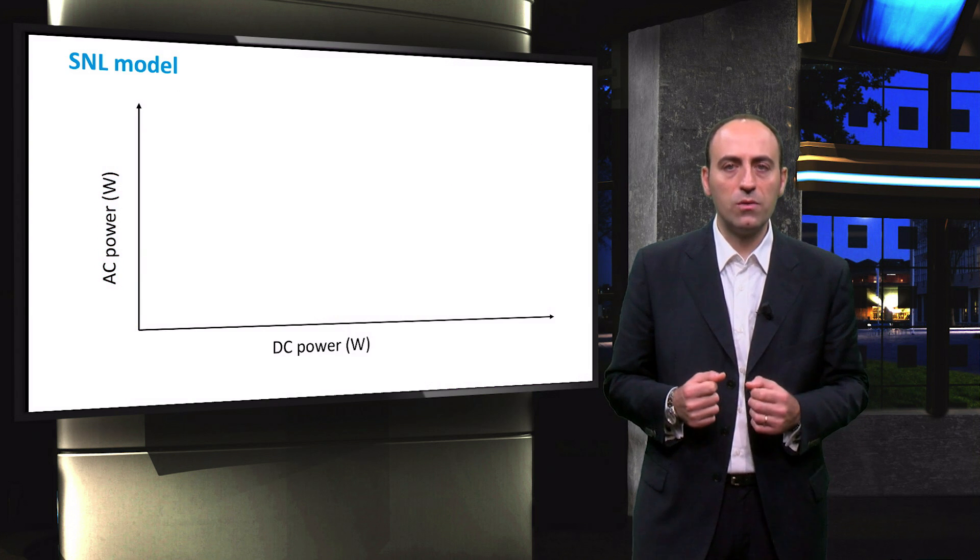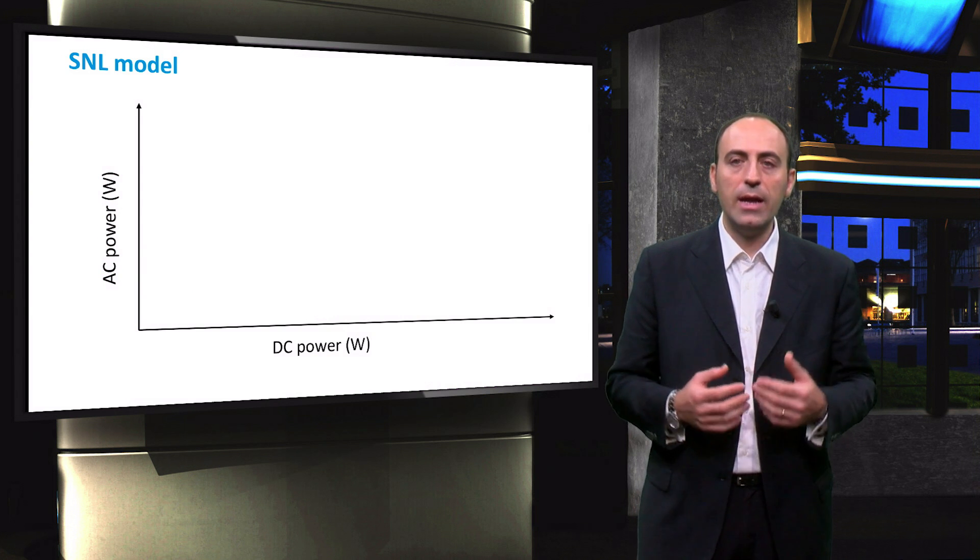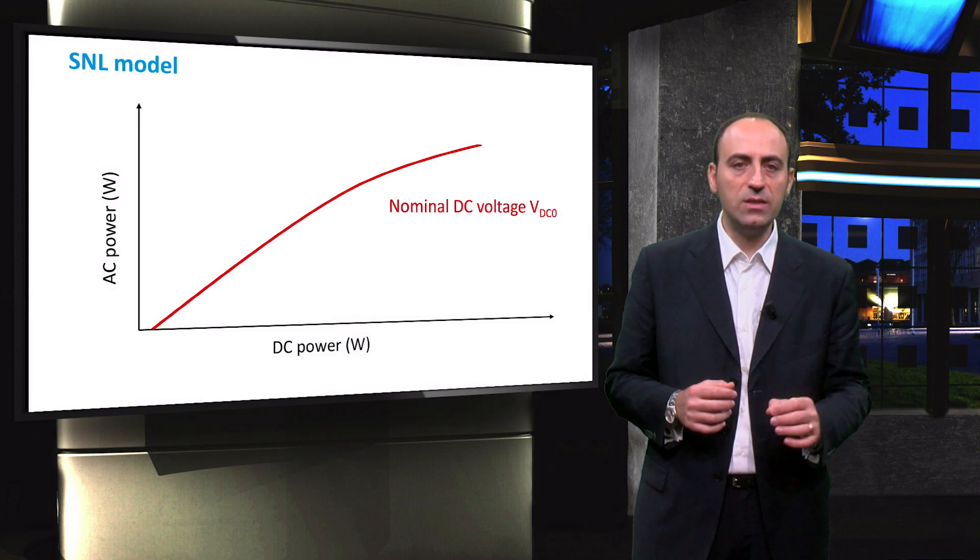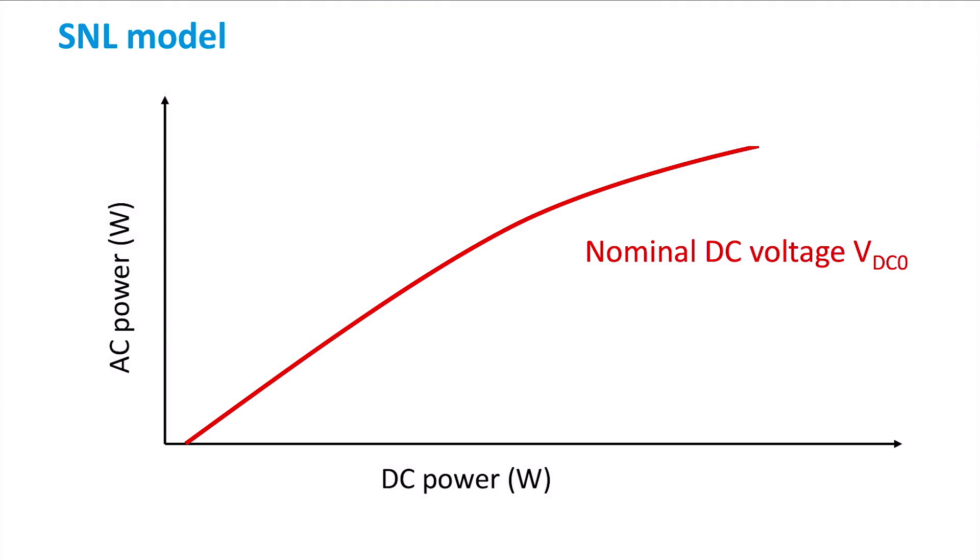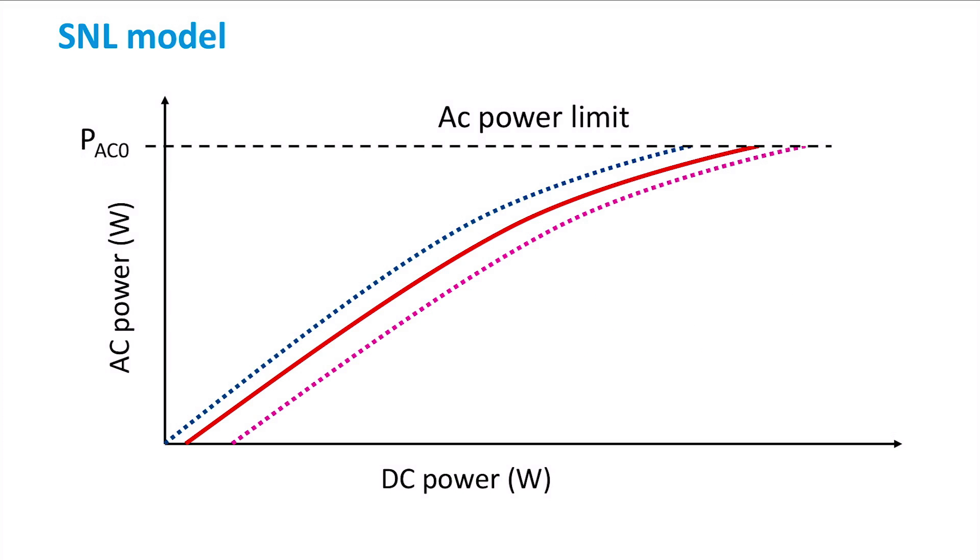With the Sandia National Laboratories model, it is possible to define some parameters that help describe the efficiency of the inverter. Let's consider a device working at nominal voltage VDC0. It is possible to notice that the pattern changes whether we work with a lower or a higher voltage. It is important to underline that in the diagram shown, the non-linearity of the input-output behavior of the inverter is emphasized. The AC power limit for which the inverter is designed is PAC0 and provides the nominal DC power PDC0 when it crosses the nominal voltage line. The curvature C0 is the parameter used to describe the non-linear nature of the inverter characteristic.